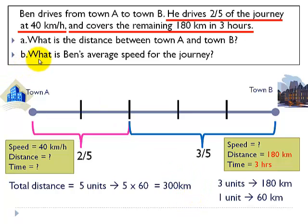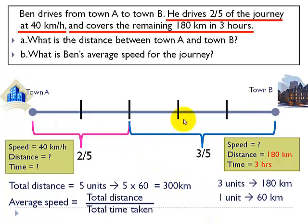The second question is what is Ben's average speed for the journey? We know that average speed is given by total distance from A to B divided by the total time taken for the journey from A to B. We know the total distance which is 300 km, but we don't know the total time taken. We know the time taken for this three hours, but we don't know the time taken for this part of the journey. So first we have to find the time taken for the first part of the journey.